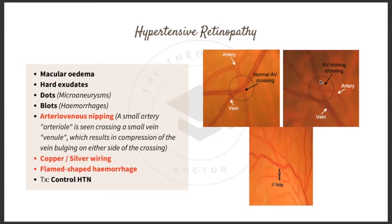At the AV crossing in hypertensive retinopathy, the artery compresses the vein, causing bulging on either side of the crossing. In a normal AV crossing, the vein size remains constant. There is also copper or silver wiring and flame-shaped hemorrhages. Treatment is simply to control the hypertension.